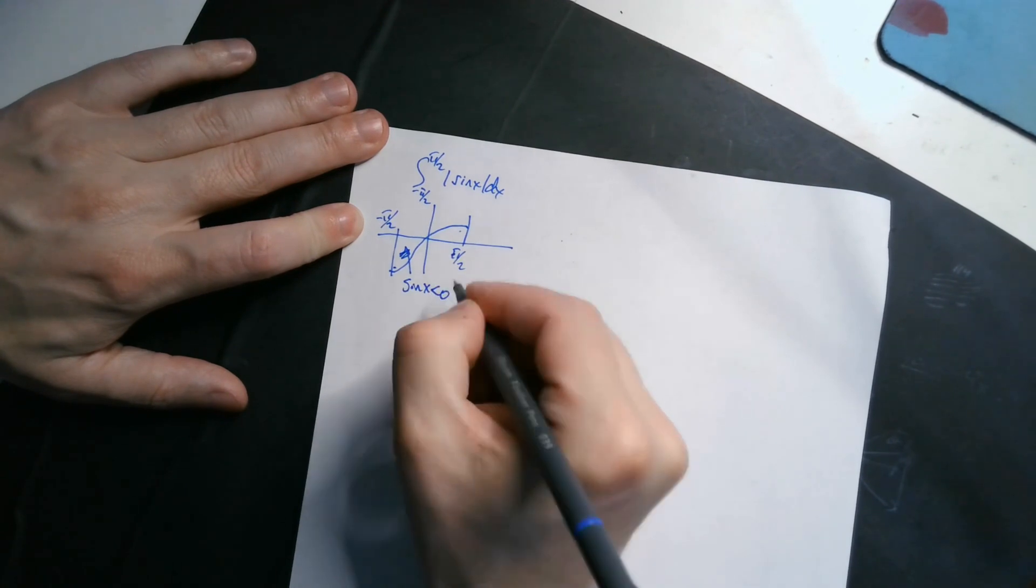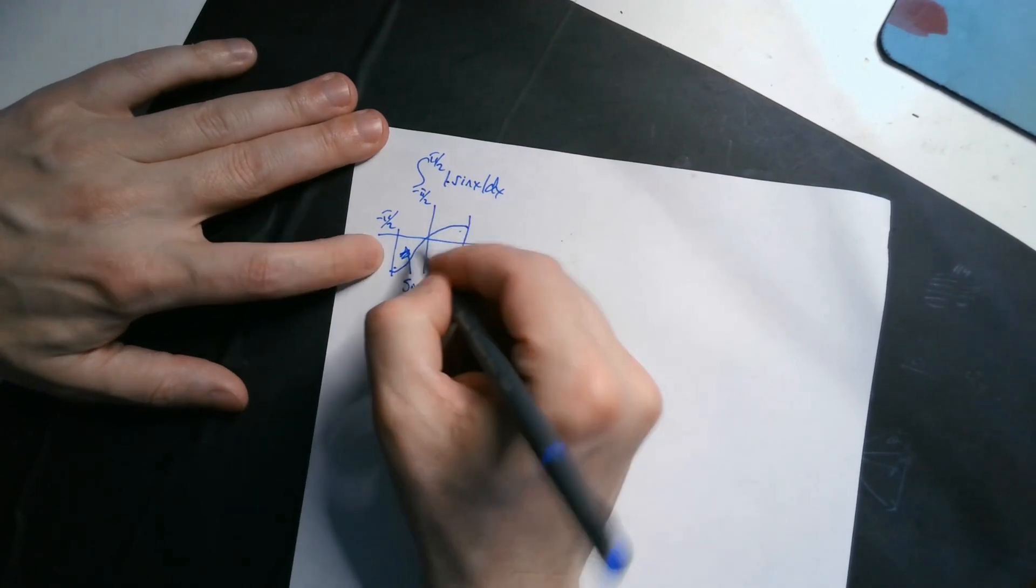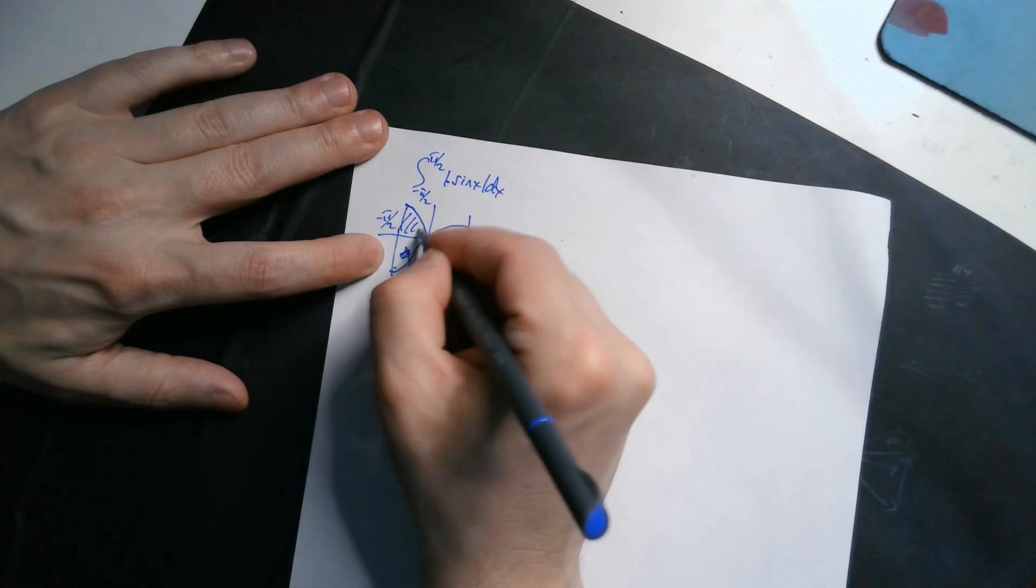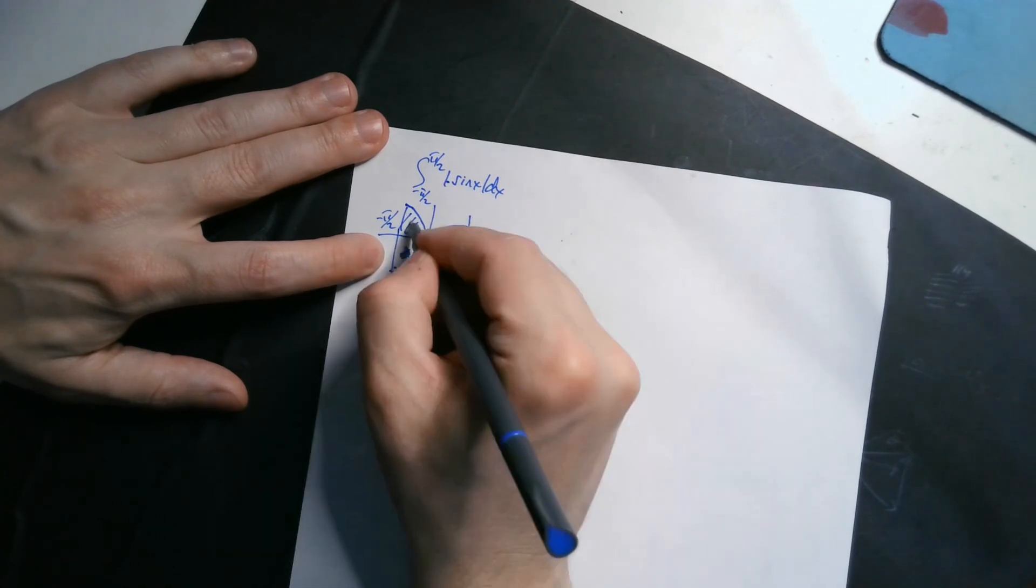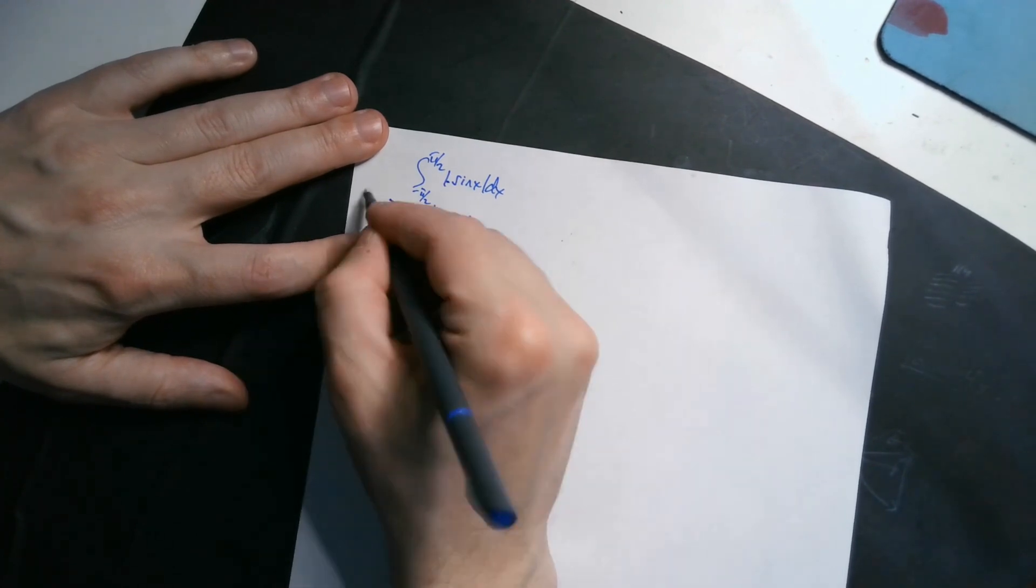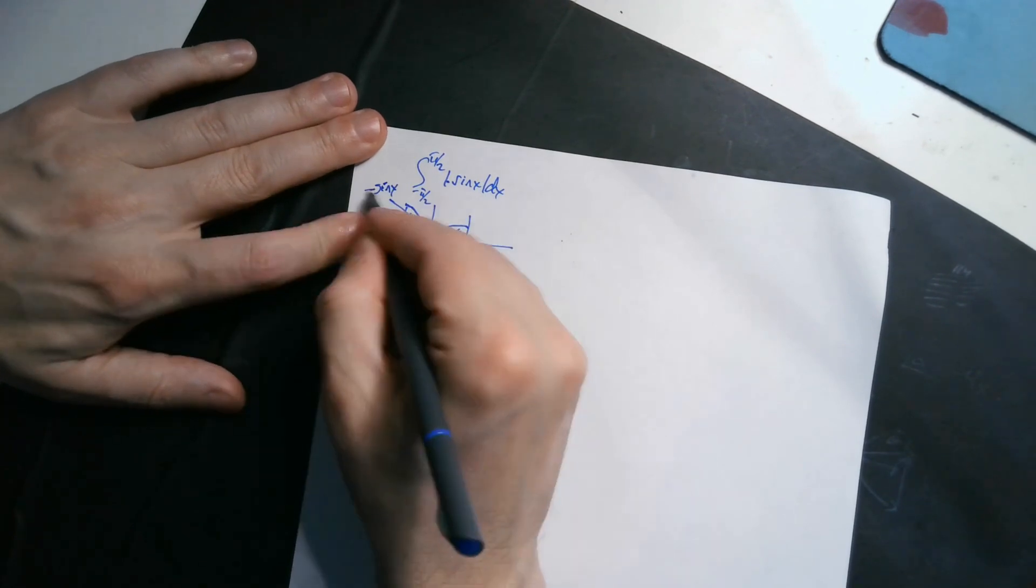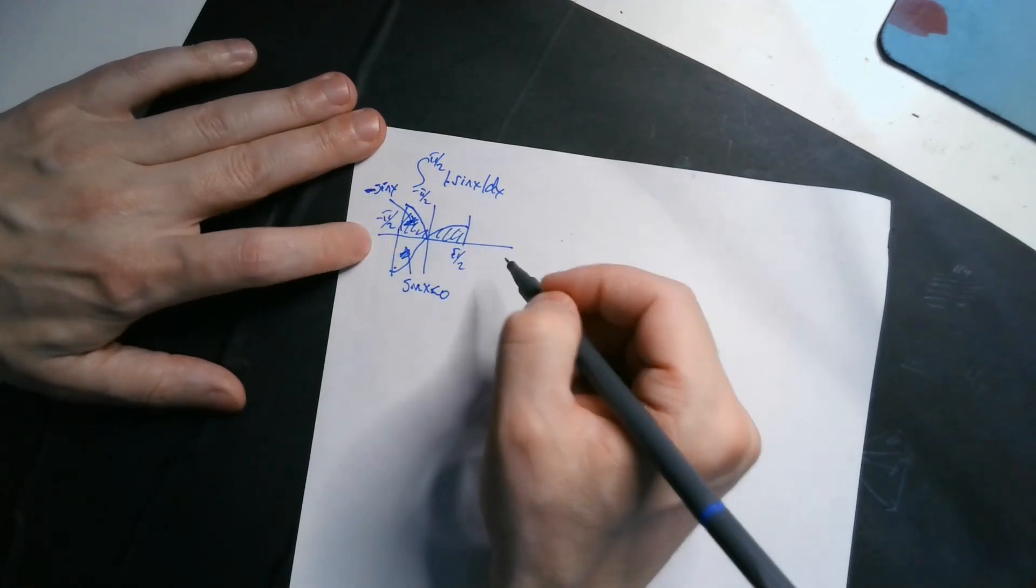Now here, sine of x is less than 0, but you've got to take the absolute value, so you've got to flip it up top, and you're looking for this plus this. To account for this piece, you've got to do negative sine x. So I'm taking sine and just multiplying by negative to make it positive there.